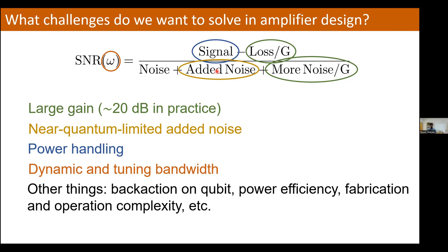Beyond basic amplifier characteristics, there are other practical issues. Some amplifiers may cause classical back-action on the qubit being measured because signals sent to the amplifier leak back into your qubit. You may also care about power efficiency — minimizing the amount of pump power you supply to achieve a certain amplifier performance. And in general you may want a simpler-to-fabricate and operate type of amplifier as well.